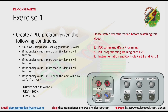Let's have our demonstration. As you can see here, the analog value is more than 25%. Now let's increase the analog value. Now it is more than 50%, that's why lamp 2 is now turned on. And now it is more than 75%. Now let's make it 100%. As you can see here, all the lamps are blinking because the value of the analog is at 100%.